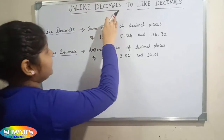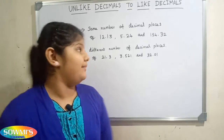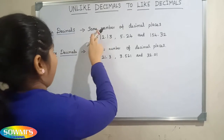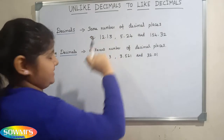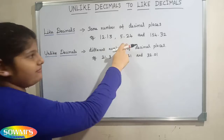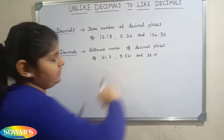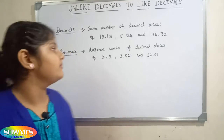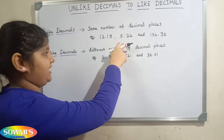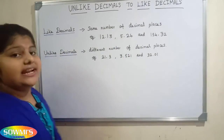Before we see how to convert unlike decimals into like decimals, we have to know what is meant by like decimals and unlike decimals. Like decimals have the same number of decimal places. For example, 2.13, 5.24, and 154.32 — all these numbers have the same number of decimal places, so they are called like decimals.